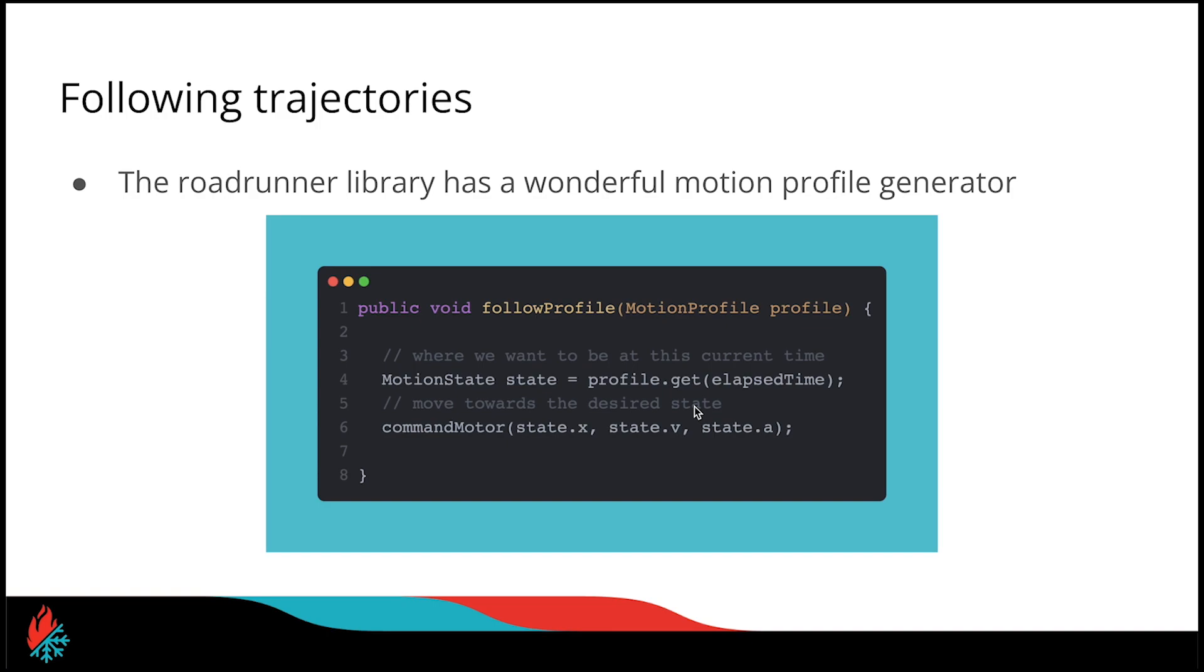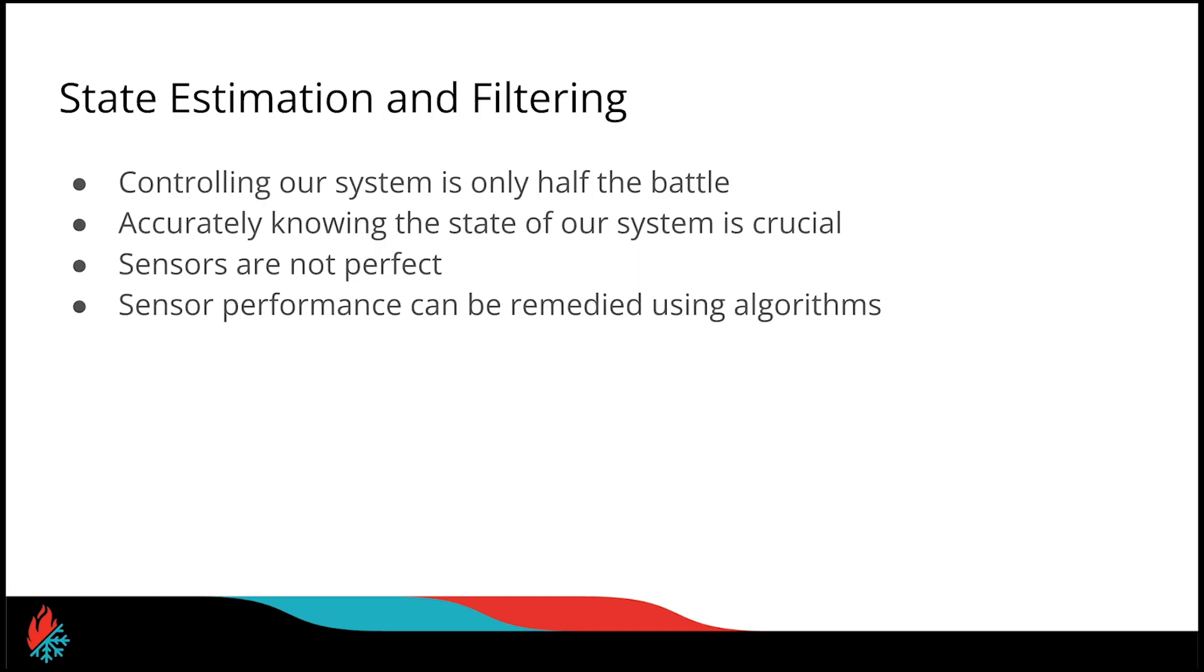One library for FTC that has a great motion profile generator is Roadrunner. Roadrunner even allows for jerk constraints, which is the derivative of acceleration, so you can get even more control movement if you so desire. One area of FTC that's been completely neglected, but should be paid a lot more attention to, is that of state estimation and filtering. In control theory, actually controlling our system with feedback is only half the battle. The other battle is accurately knowing where our system state is. The issue with this is sensors are not perfect. To remedy this, we can use special algorithms to increase the sensor performance.